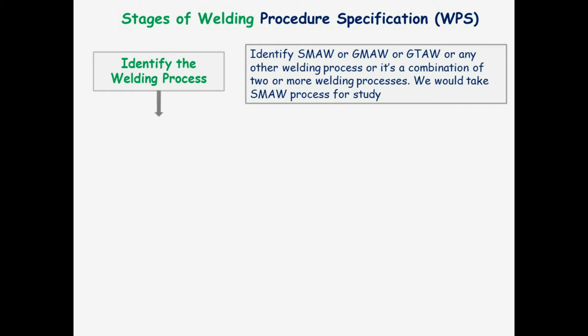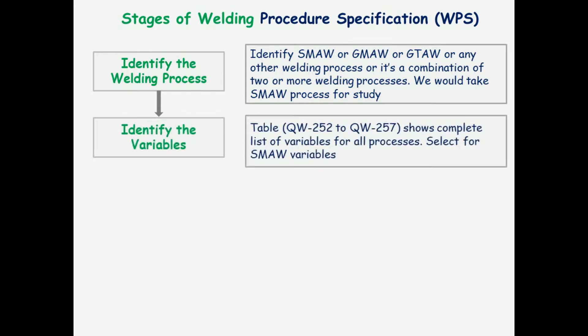Next is to identify the variables. Table QW252 to QW257 shows a complete list of variables for all processes. Select the relevant variables for SMAW.